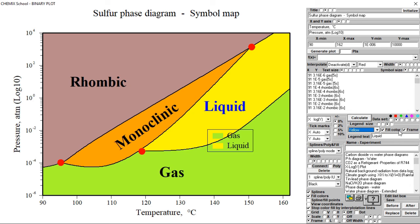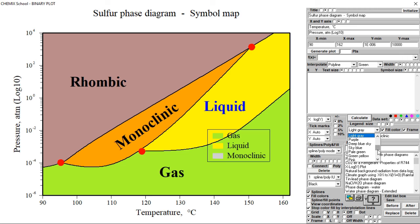Repeat what previously has been done, but now with different text and color for the monoclinic region. At last, click the next radio button, insert text and select a color for the rhombic region.